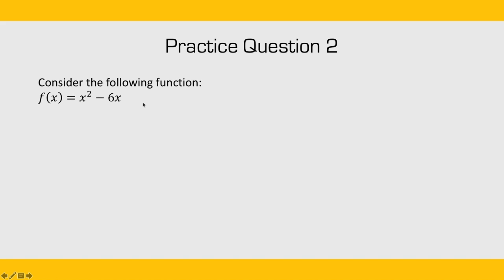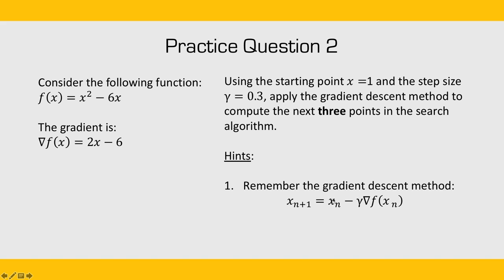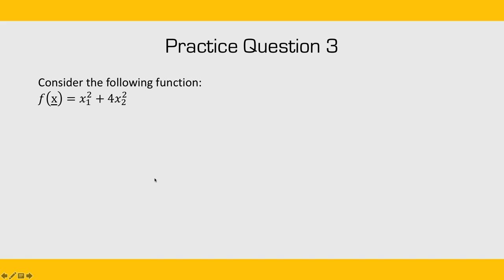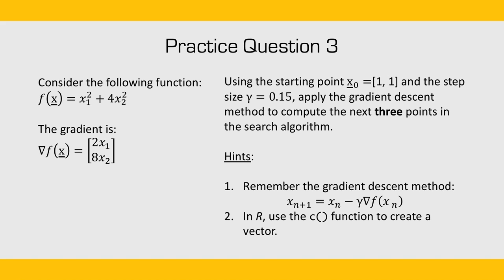For practice question two, consider the given function and its gradient. Using a starting point of x equals 1 and a step size of 0.3, apply the gradient descent method to compute the next three points. Remember, gradient descent takes your current point and subtracts the step size times the gradient at that point. For question three, we do the same process but with a two-dimensional function in x1 and x2. Using starting points x1 equals 1 and x2 equals 1 with a step size of 0.15, apply gradient descent to compute the next three points. In R, you can use the c function to create a vector of two values.